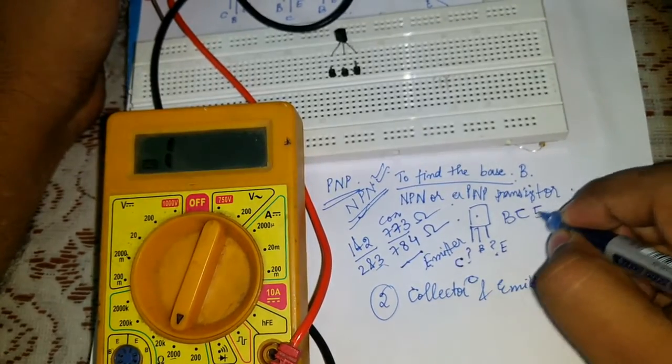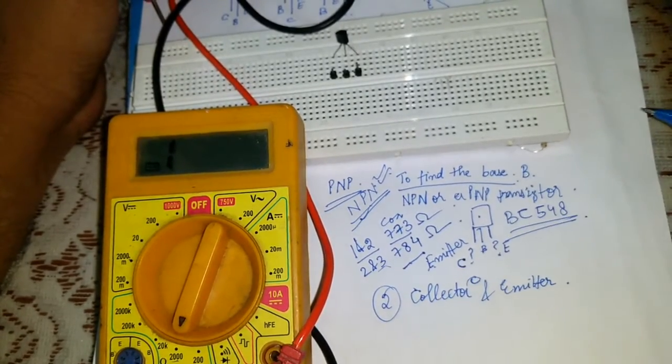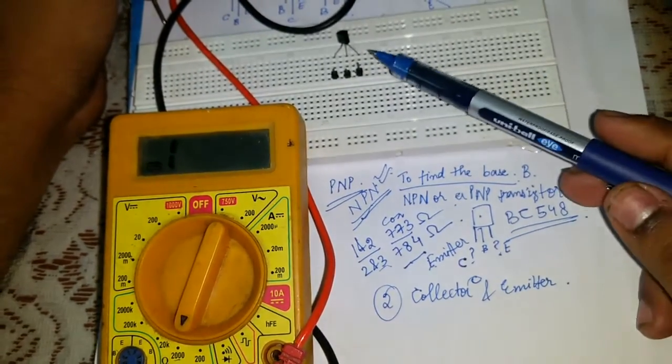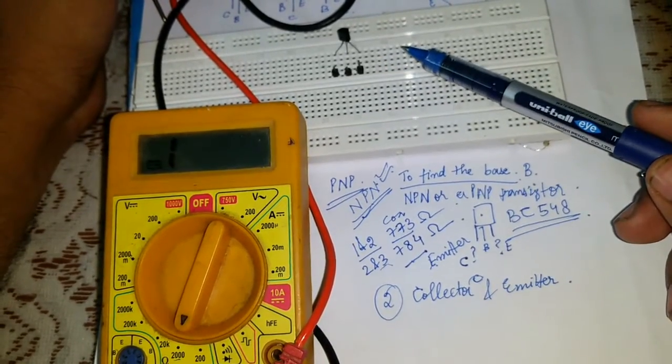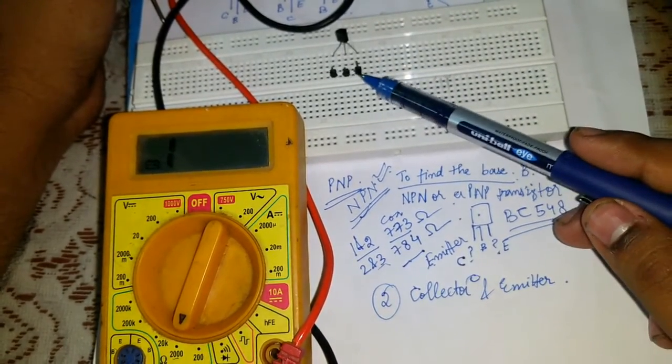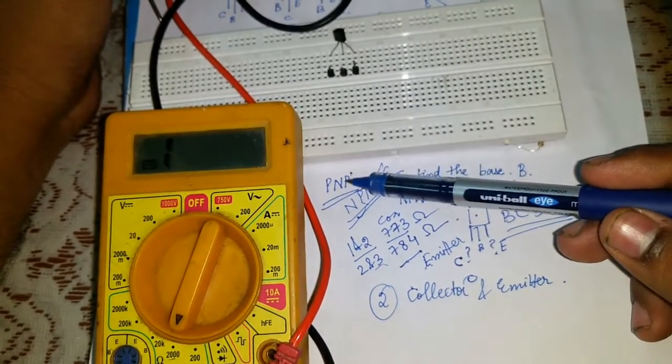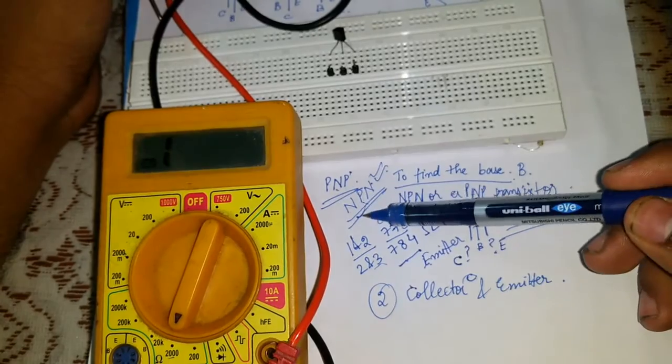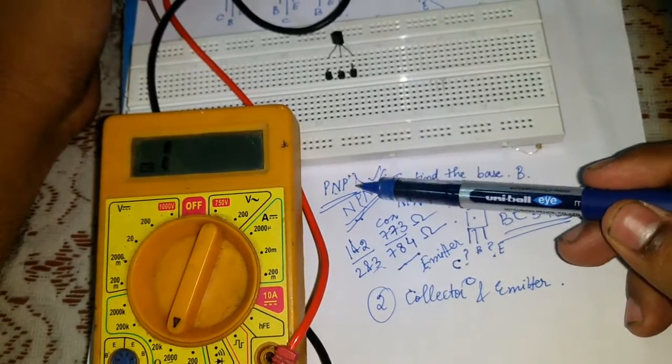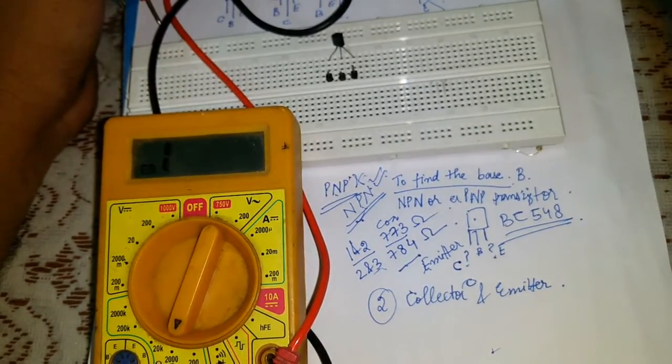Well, using this procedure you can find the collector, base, emitter for any of the transistor, even PNP, and you can identify PNP and NPN also.